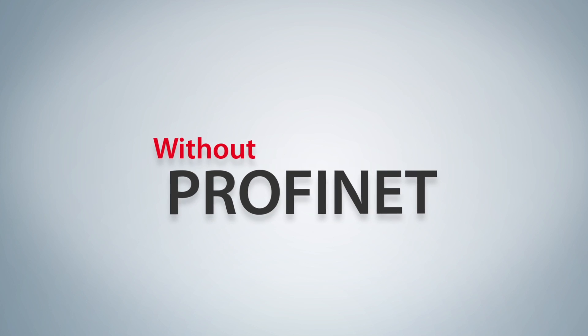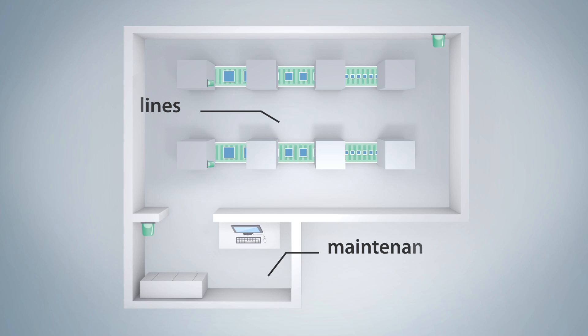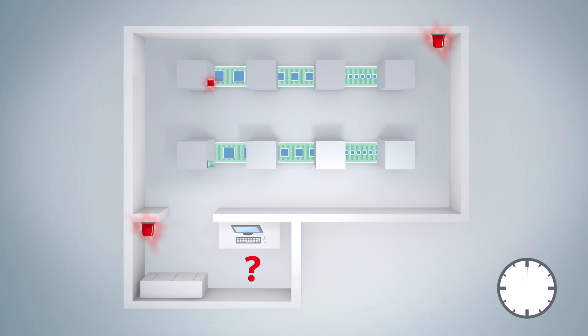A look at use in practice. Let's consider a system with two production lines and one maintenance room. Let's assume that you haven't switched over to PROFINET yet. Lots of questions arise when an error occurs.